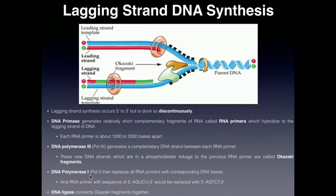DNA polymerase 1, or Pol1, then takes these RNA primers and basically replaces them with the corresponding DNA bases. So after this step, all the green RNA primers get replaced with more DNA. For example, if a primer's sequence was A, G, U, C, U — after Pol1 acts, it would be A, G, T, C, T. In other words, it's exactly the same sequence except the U's are replaced with T's, because we don't have U's in DNA.